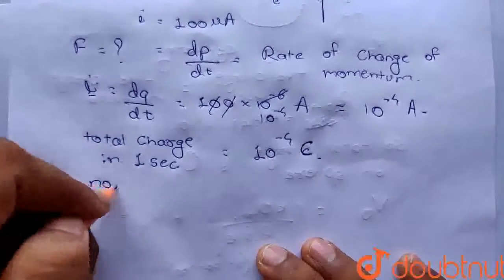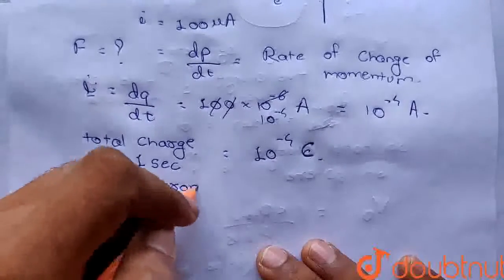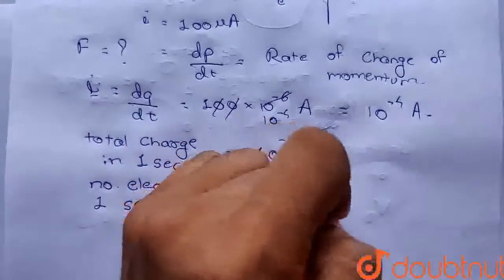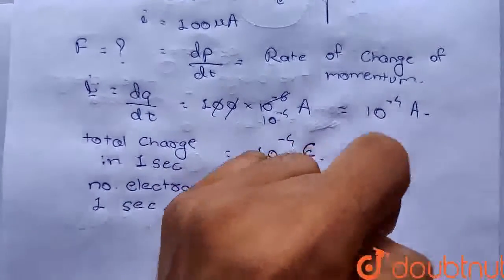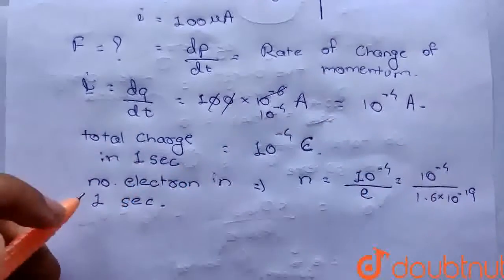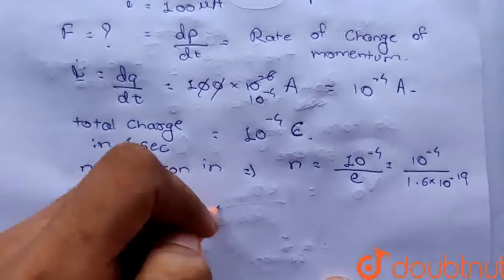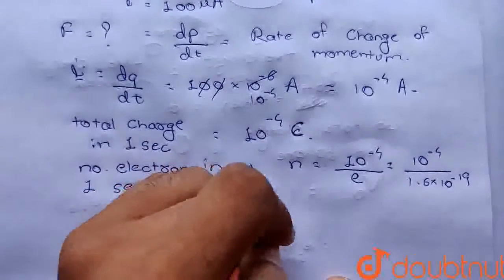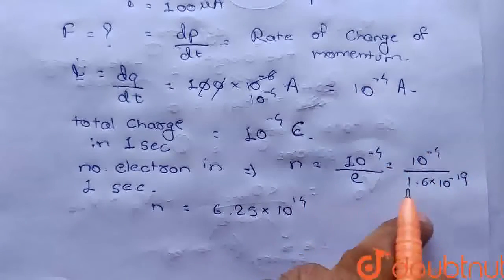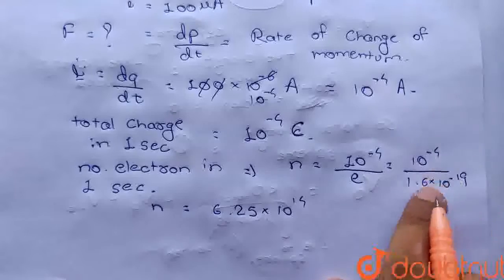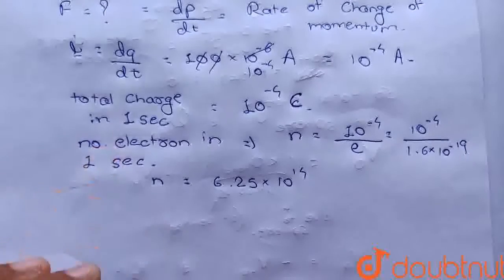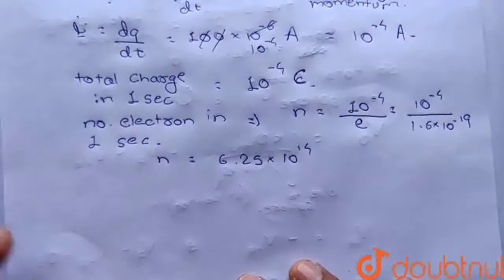अब total number of electrons in one second कितना होगा? Total charge जितना flow कर रहा है उसे charge of electron से divide करेंगे। Charge of electron 1.6 into 10 raise to power minus 19 के बराबर है। तो n की value आ जाती है 6.25 into 10 raise to power 14 electrons per second।